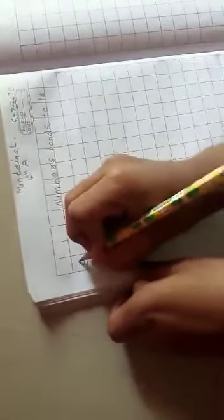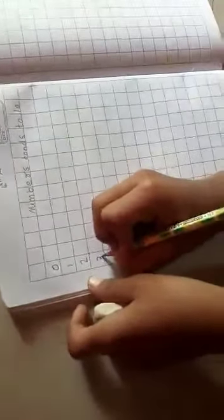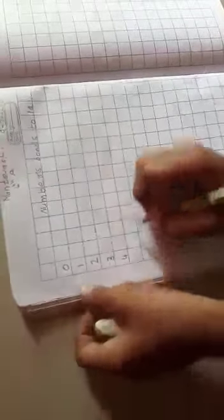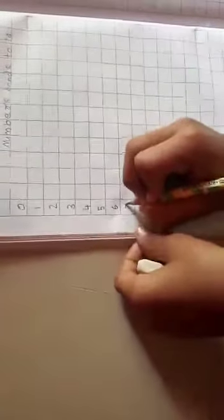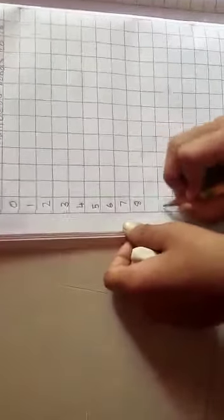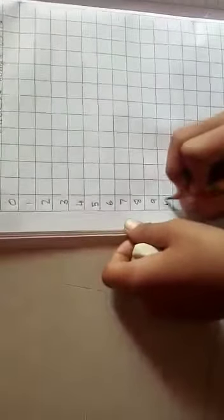I will be writing 0 to 10. 0, 1, 2, 3, 4, 5, 6, 7, 8, 9, 10.